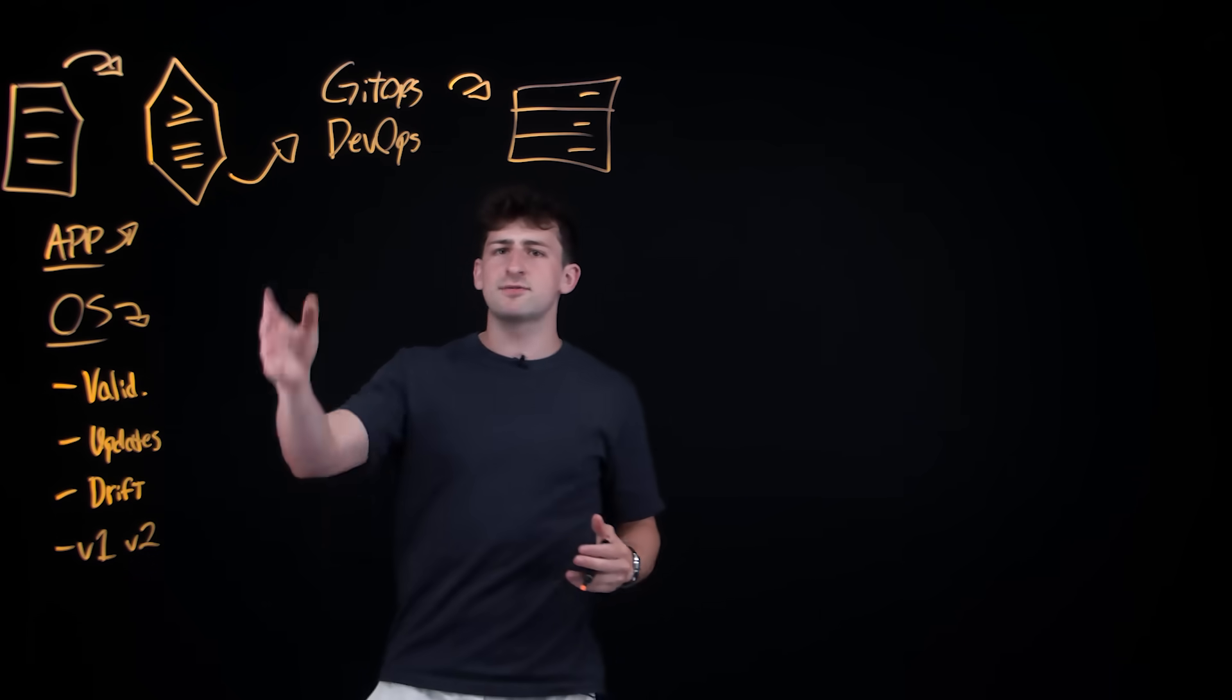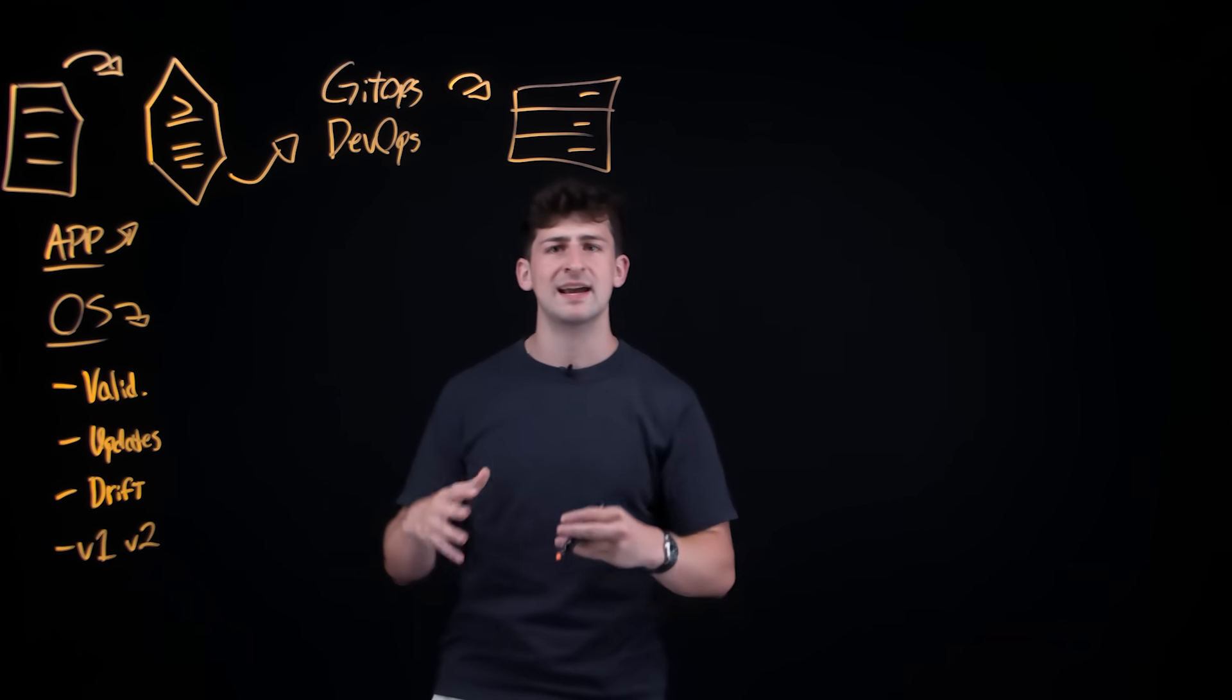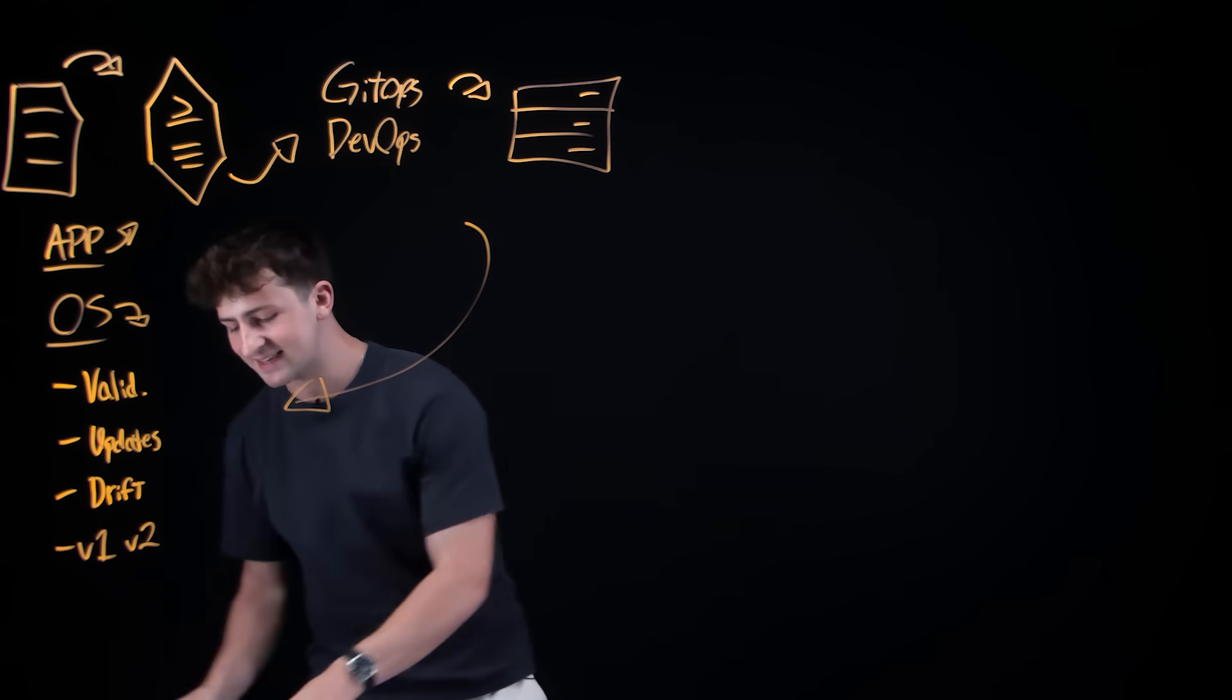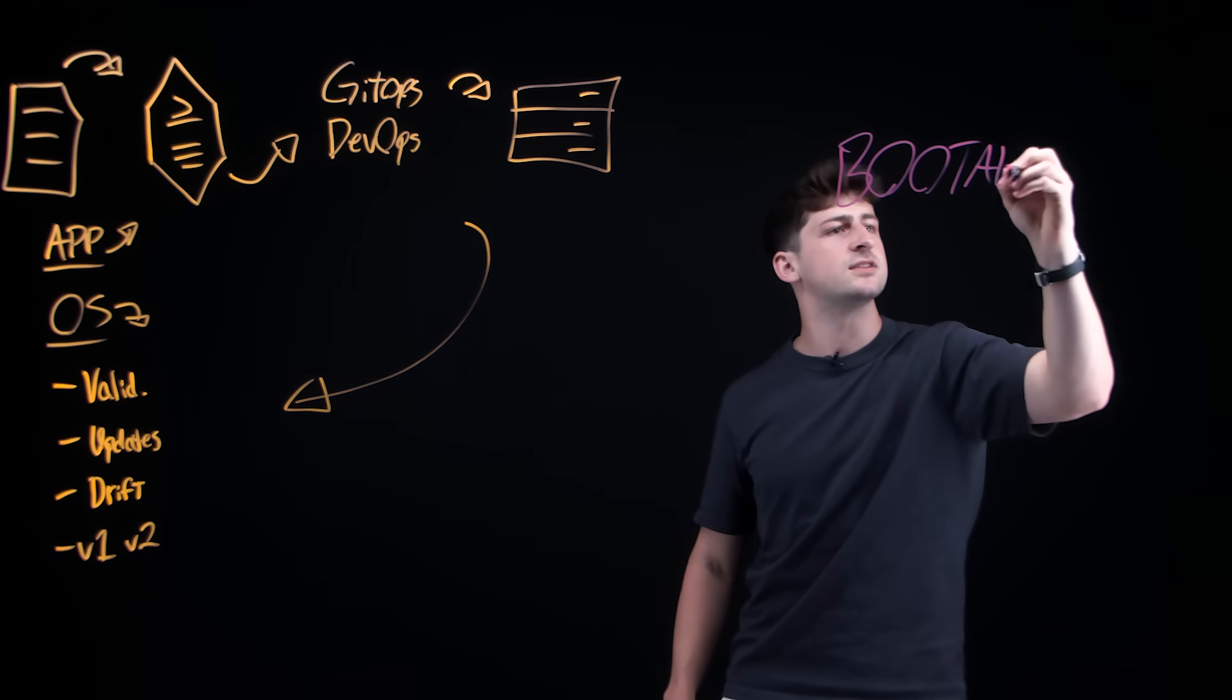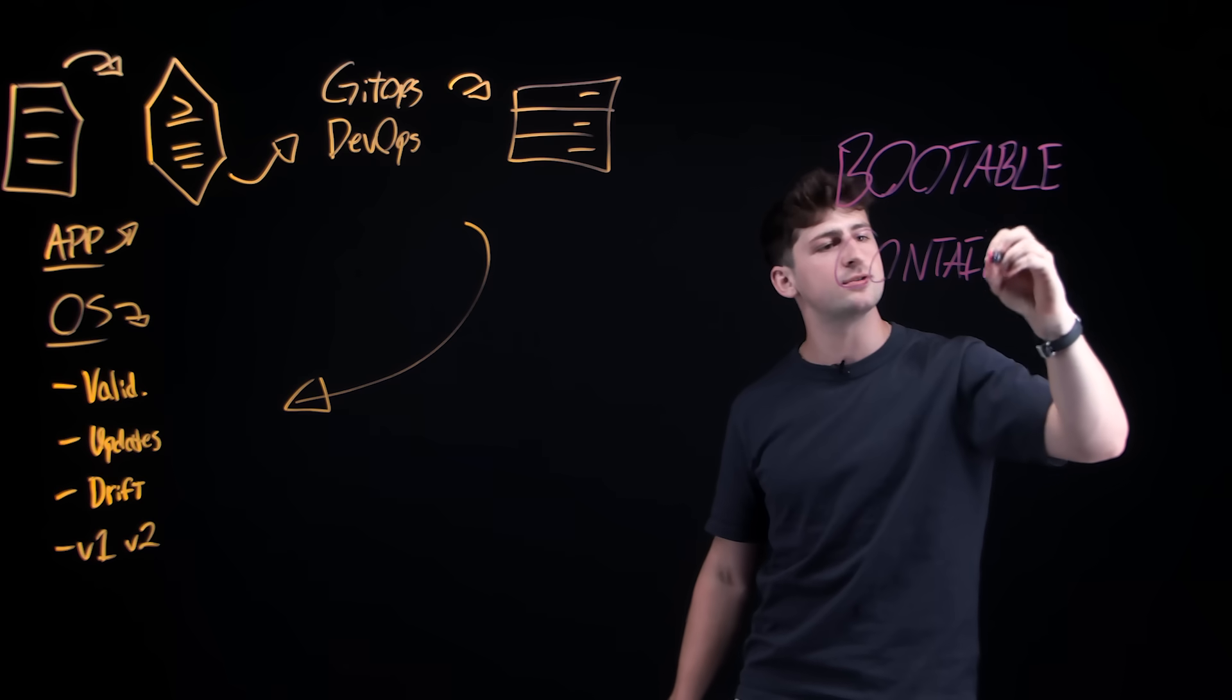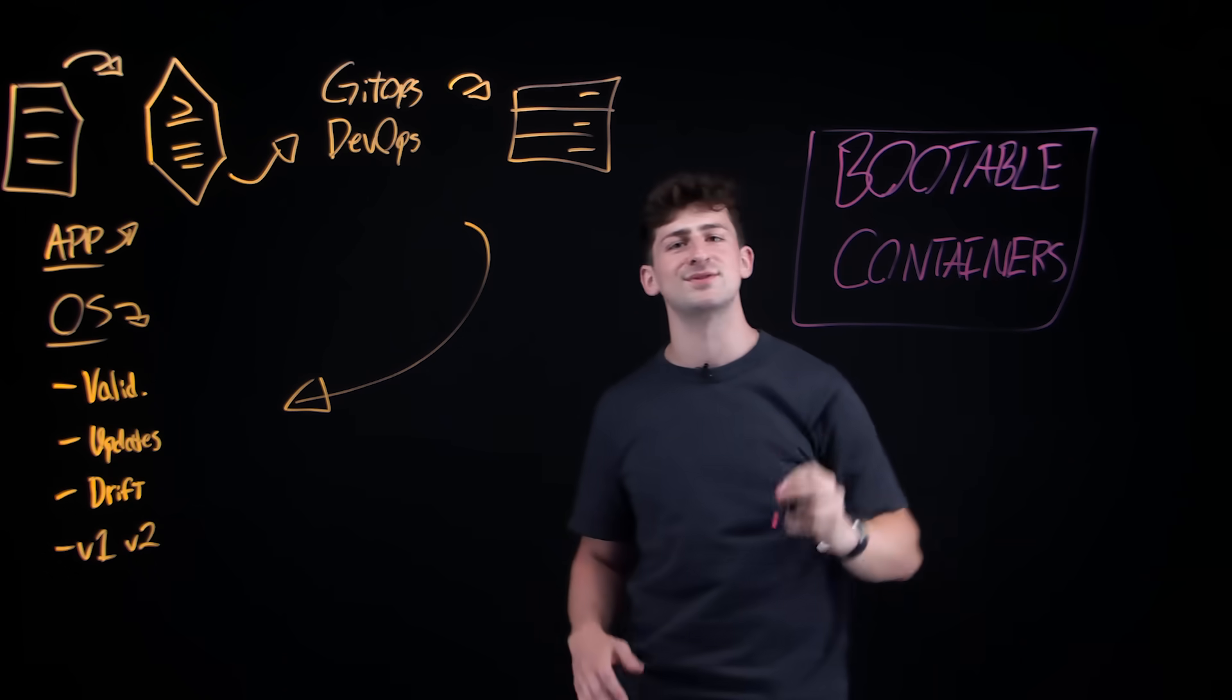A lot of this has been solved with containers and containerization processes. But what if we could extend the learning that we've done there in that industry standard that we've created from containers to operating systems themselves? What I want to introduce you to today is a technology that's called bootable containers. So bootable containers, what they allow us to do is essentially package up a single atomic and immutable system image using existing container-native workflows that we're already used to, such as Podman or Docker. And in this video, you're going to learn how specifically this works.